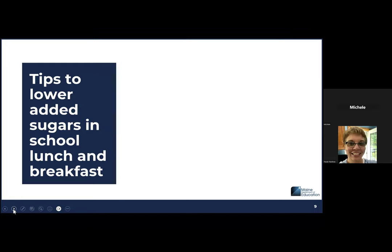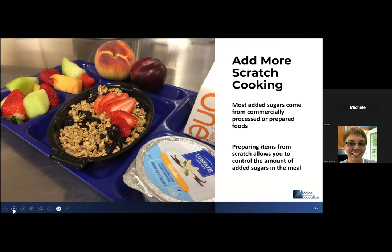Now we're going to look at some tips to lower the added sugars in school lunch and school breakfast. One thing we say during just about any presentation is add more scratch cooking. Most added sugars come from commercially processed or prepared foods, and preparing items from scratch allows you to control the amount of added sugars in the meal.